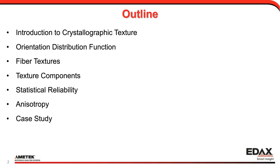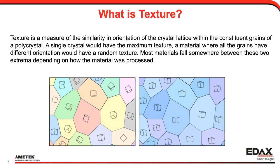So, what is texture? Texture basically is a measure of how similar the different grain orientations are in a polycrystal. A single crystal essentially would have the maximum texture, where all the grains have the same orientation. But if each grain has a very different orientation, then the material wouldn't have any texture, or would have a random texture. Most materials fall somewhere between those two extremes, depending on how the material was processed. It's actually very difficult to produce a material that doesn't have any texture.